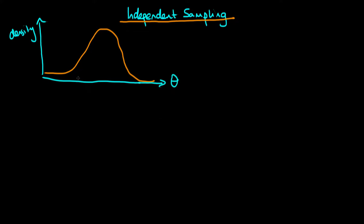The idea with independent sampling is that we might sample one value from this distribution, say that we sample a value of 1.4, and then we draw another sample from that distribution, say we sample the value of theta being equal to 2.3. The idea with independent sampling is that apart from the fact that these two values came from the same distribution, apart from that they are not connected in any way.